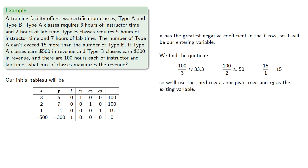So we'll use our third row as the pivot row, and C3 as the exiting variable. So we'll row reduce.